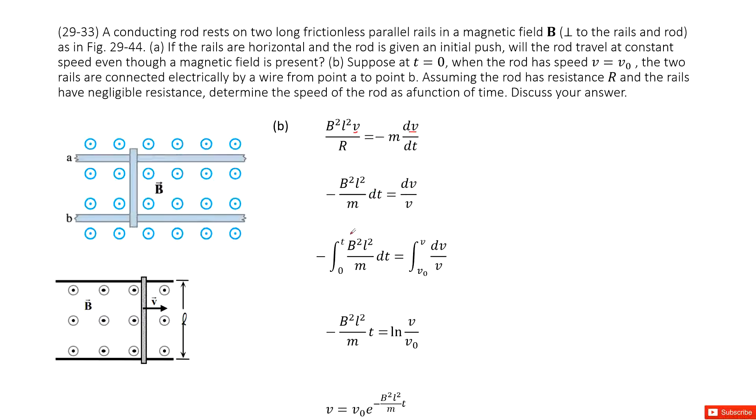And do the integral on both sides. On the left-hand side, initial is zero, finally the time is T. Initial velocity is v₀, finally the velocity is v.